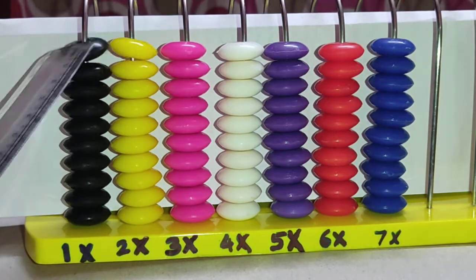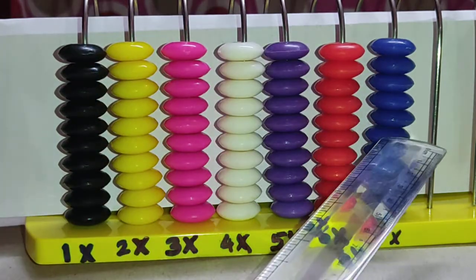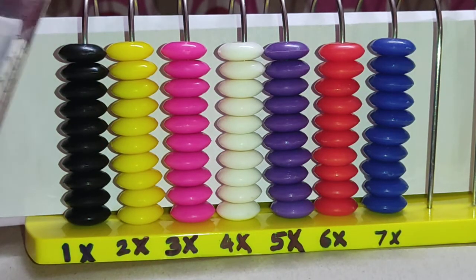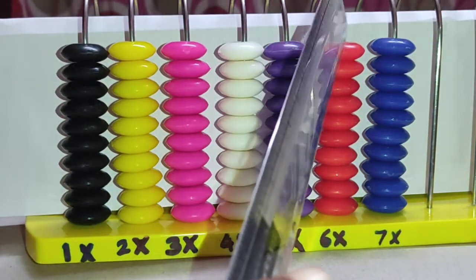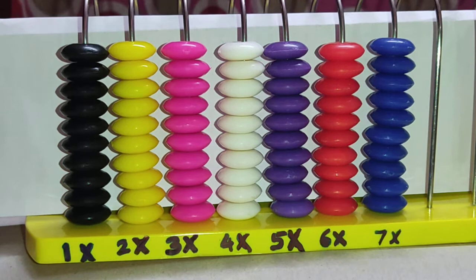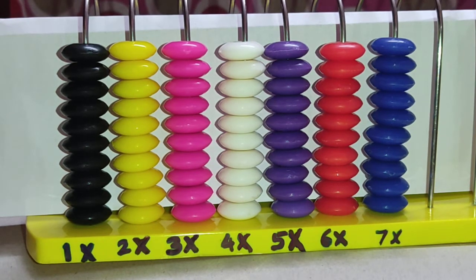Now, 7 times 10 is equal to 70. 10, 20, 30, 40, 50, 60, 70. 7 times 10 is equal to 70.